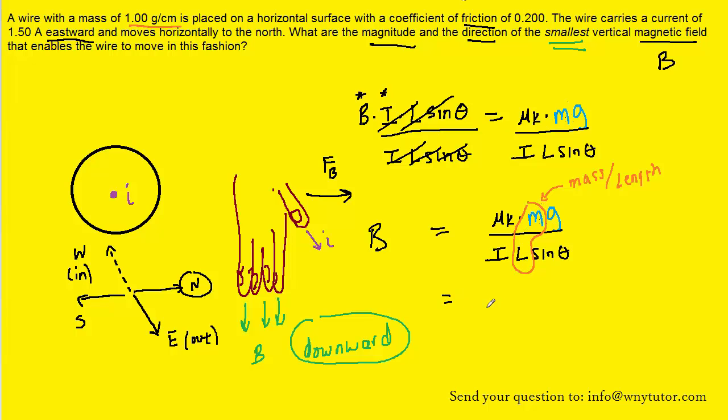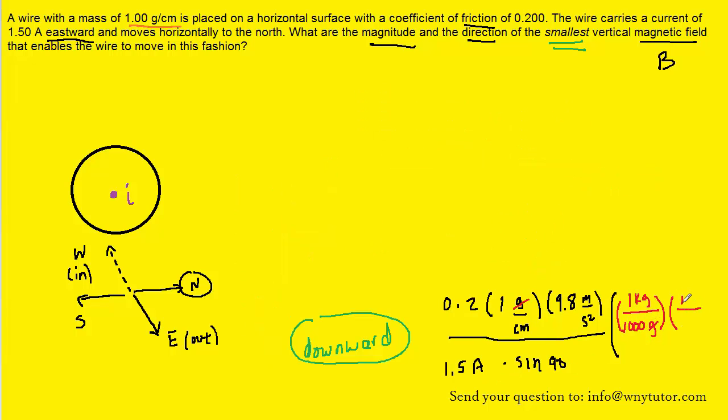We'll go ahead and plug in the known values. The coefficient of friction is 0.2, the term m over l is 1 gram per centimeter, g is 9.8 meters per second squared, the current was 1.5 amps. We're not plugging anything in for l because we've already accounted for it in the m over l term. Then we multiply by sine of 90. The only thing that needs to be done is conversion from grams to kilograms and centimeters to meters into standard units. We can do that conversion in the numerator. One kilogram is a thousand grams, which cancels out the grams. There are 100 centimeters in one meter. If we set up the conversion that way, the centimeters will cancel out.